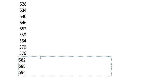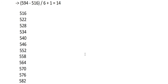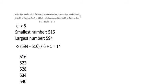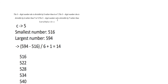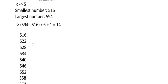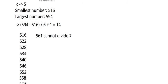We draw all 14 numbers. Now we need to analyze which number, when its digits are swapped (CPA becomes CPA reversed), can divide by 7. Starting with 516 — swapping gives 561 — and 561 cannot divide by 7, so we reject this number.